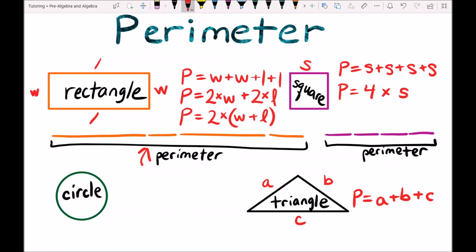And let's do the circle which is the most complicated. So the perimeter of a circle has its own special name, and the perimeter of a circle is called the circumference.